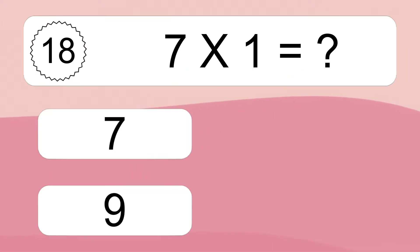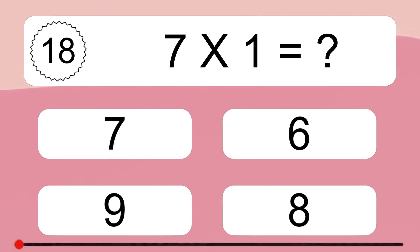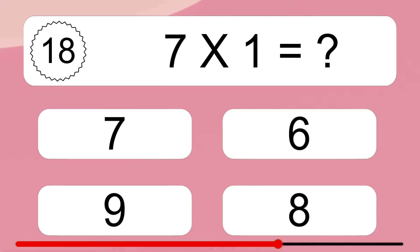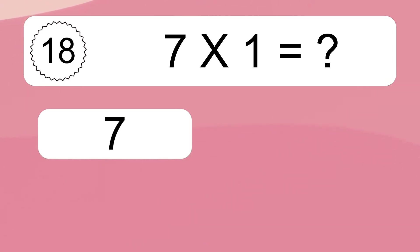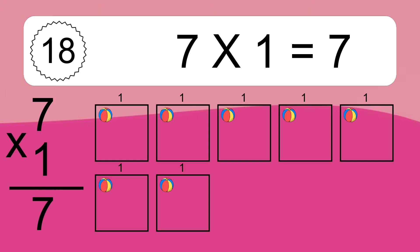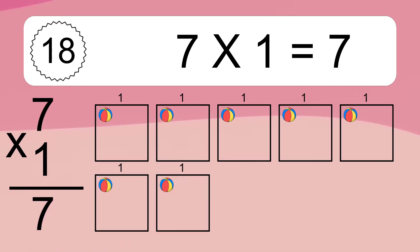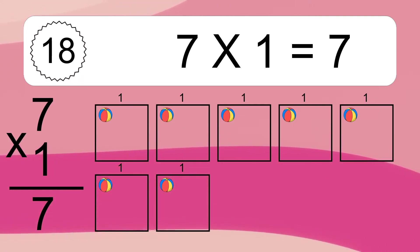7 times 1 equals 7. We have 7 boxes and each box has 1 colorful ball inside. If you count all the balls in all the boxes together, you will have 7 times 1 balls. This equals 7 balls.